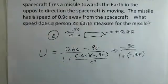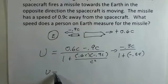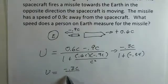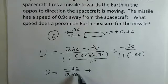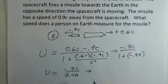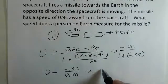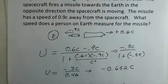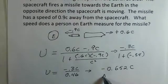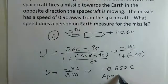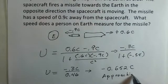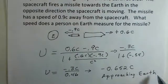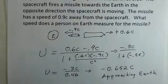So just continuing this, our u would be minus 0.3c divided by 0.46. So I'm going to take the minus 0.3 and divide by 0.46, and I come up with minus 0.652c. Now we're in the frame of reference of the Earth. We're approaching the Earth. Because it's negative, it's off to the left in our coordinate system. But this is the speed someone on Earth would measure for this object.